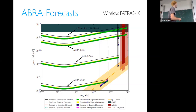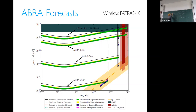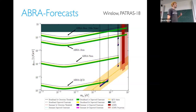ABRACADABRA is only sensitive to the axion-photon coupling, which means you can't do model discrimination. Haloscopes are really sensitive to the axion field times the coupling constant — sensitive to the square root of the dark matter density times the coupling. You can never break that degeneracy with a single experiment; if you made a detection, you wouldn't know whether you detected the QCD axion or an axion-like particle with a smaller density.